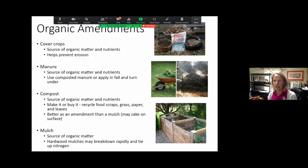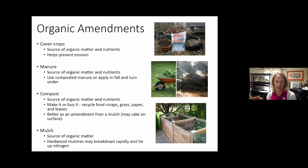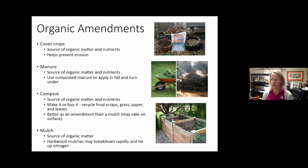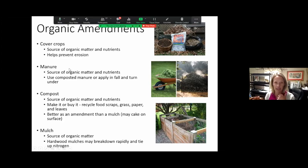Manure is another great source of organic matter. Do know where you're getting it, but you can use compost and manure — either bagged or by the truckload locally. Most places you can find composted manure somewhere. If you're putting it on fresh, you want to put it on in the fall so that you have about 90 to 120 days — which is the regulation for certified organic farmers — 90 days prior to when you're going to harvest your crop.